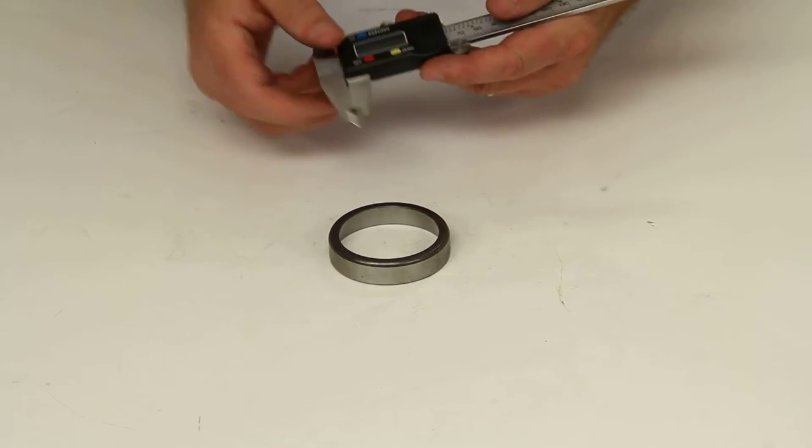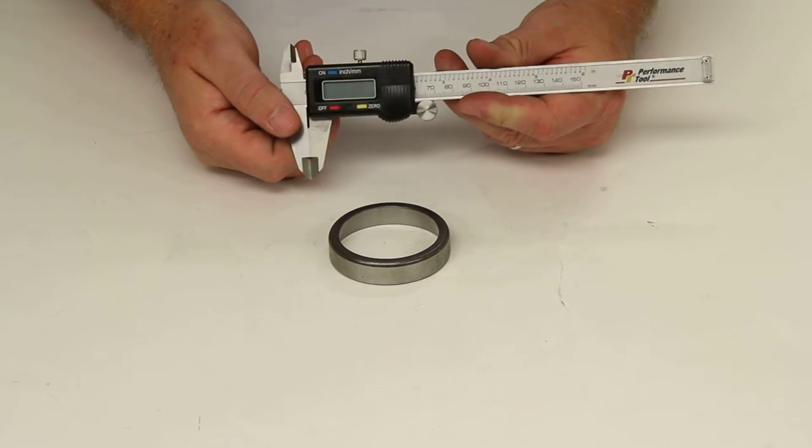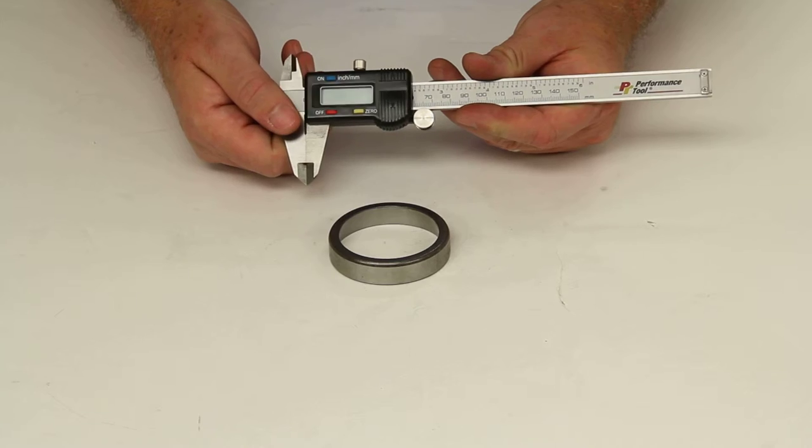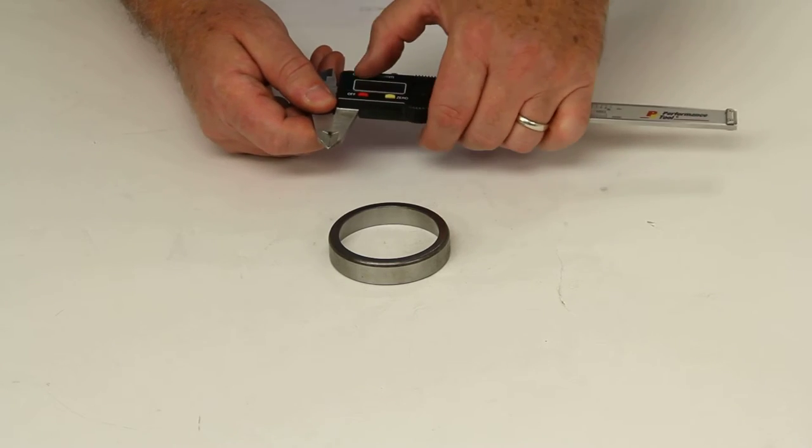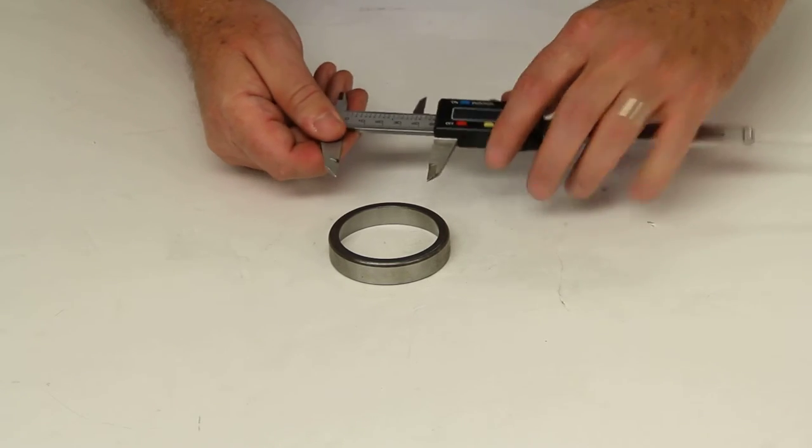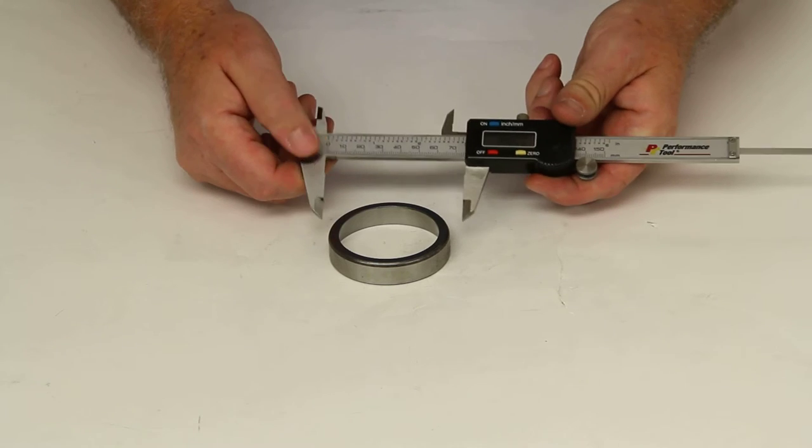To measure in thousandths of an inch, you really need a digital caliper, so that's what I'm going to use here to measure and give you the outer diameter of this bearing race.